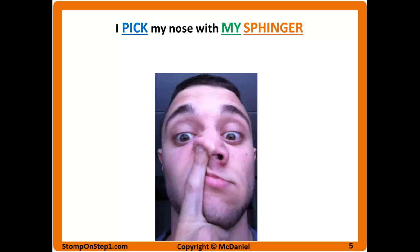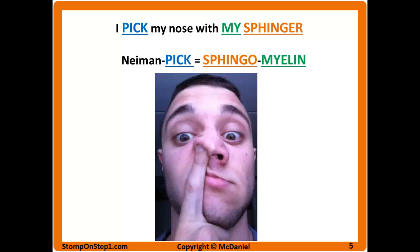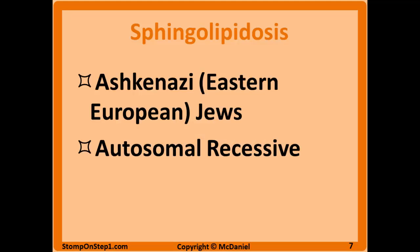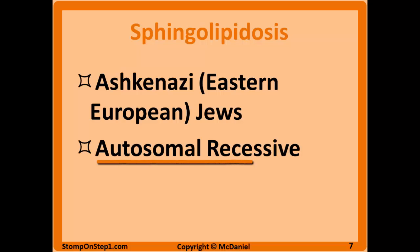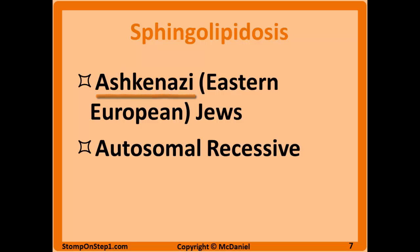This mnemonic is: I pick my nose with my sphinger — and that lets you know that Niemann-Pick is a deficiency of sphingomyelinase and sphingomyelin builds up. It's important to remember that all three of these diseases are autosomal recessive and that they're most common in Ashkenazi or Eastern European Jews.